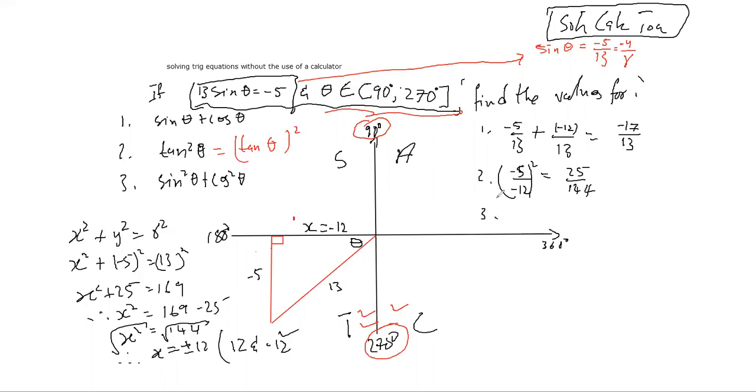Finally, sine squared plus cos squared theta - we can just take what is up there and square it. So we have an expression for this already. This is going to be 12 over 13 all squared. Some basic algebra gives us 25 plus 144 all over 169.